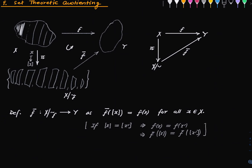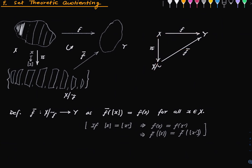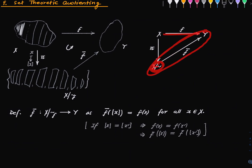And this is the set-theoretic quotient. As I said, this is a trivial fact, but you will see its importance when we export it to more complicated settings. Once again: you have some arbitrary function f; you can factor it out via the set of all the fibers. The map f factors through the set of all equivalence classes under the fiber relation. It is getting factored into two parts — one is the natural projection map pi, and the other is the map f-bar induced by f.